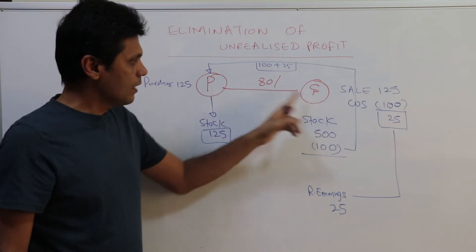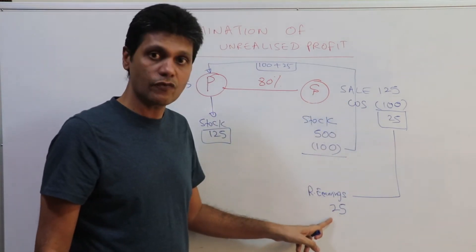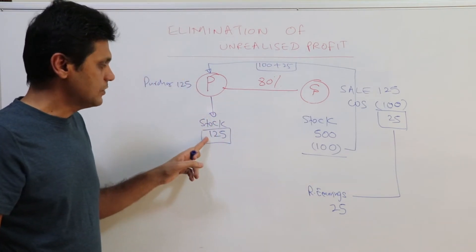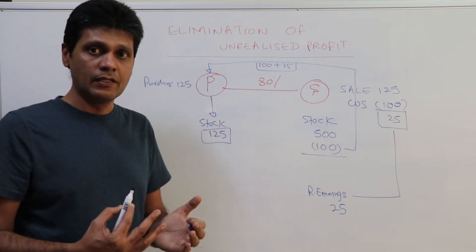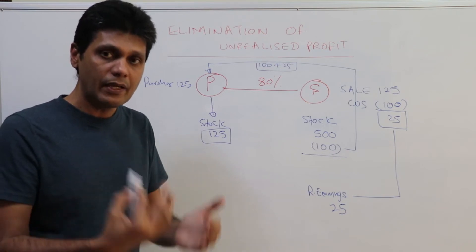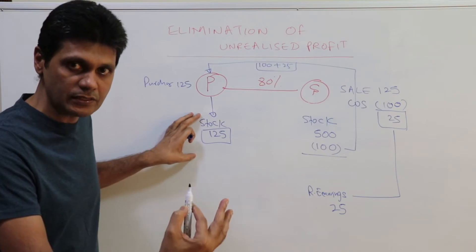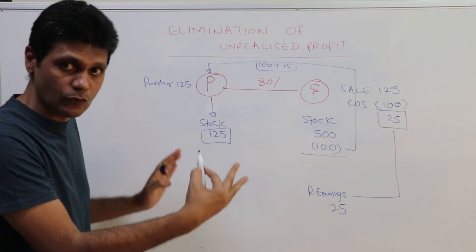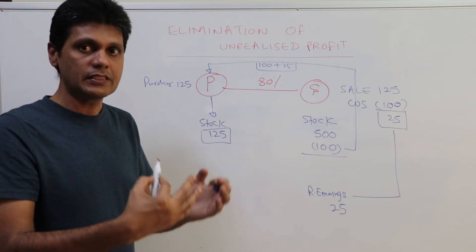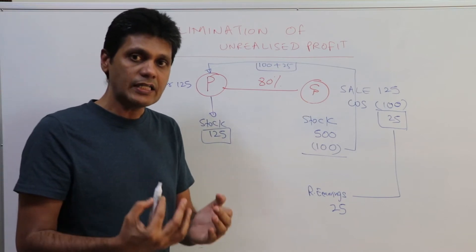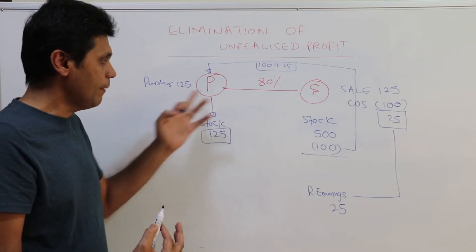S company has sold this goods to P company and recorded a profit of $25. Meanwhile, P has purchased this $125 worth of goods and it's lying in the stocks of P company. Let's assume that by the end of the period, the stocks have not been sold by the parent company to outside customers. As far as the group is concerned, if the stocks are not sold to outside customers, the profit is not realized — it's an unrealized profit.